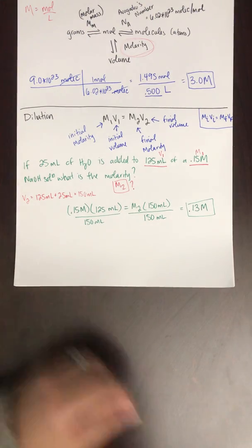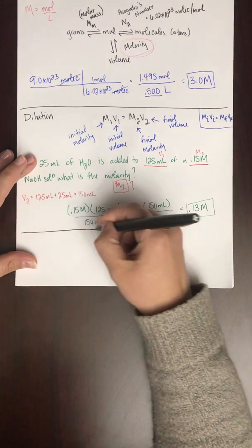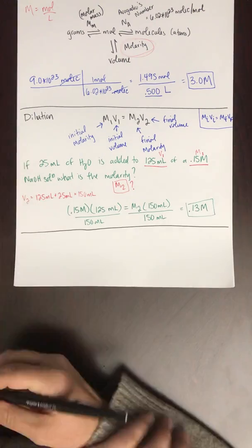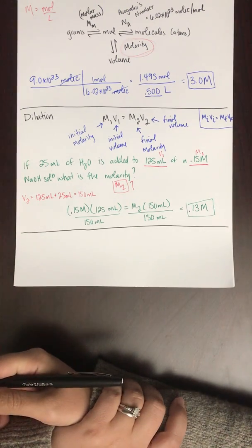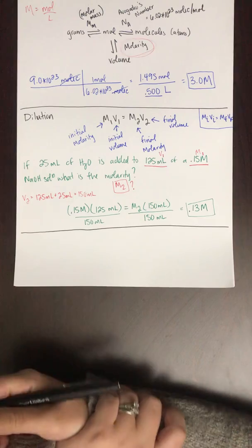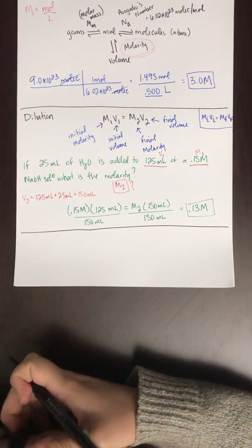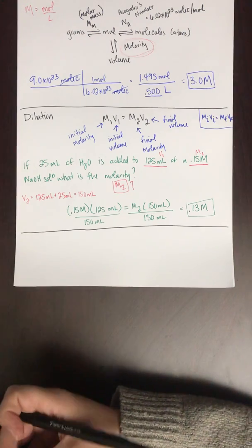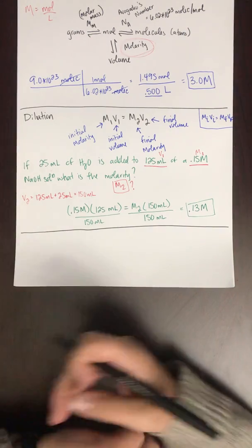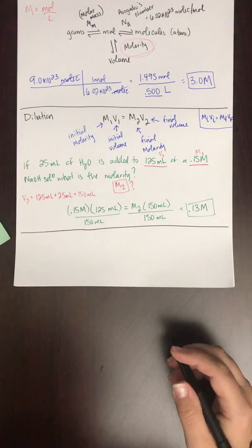Let's look at one more. How much water would I need to add to 500 milliliters of a 2.4 molar potassium chloride solution to make a 1.0 molar solution? So we're diluting it and we want to see how much water we need to add.